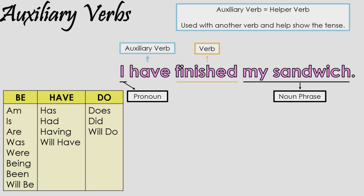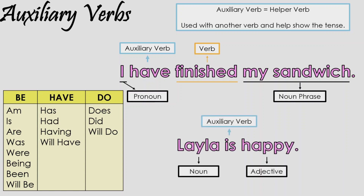However, they can also be used on their own, as they are in the sentence 'Layla is happy.' Note that all you would have to do is change the auxiliary verb to change the tense. So 'Layla is happy' becomes 'Layla was happy.'